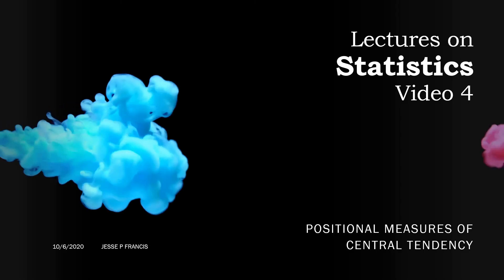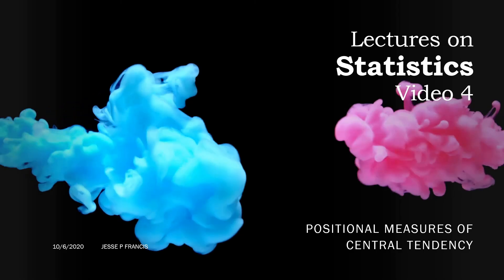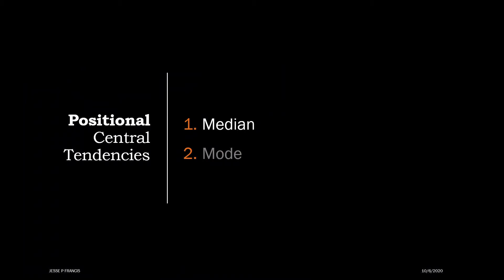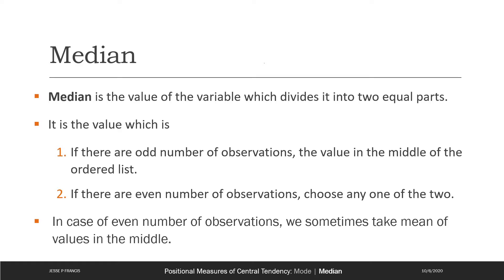We will be discussing positional measures of central tendency. There are two of them: one is median and the other is mode. We'll start our discussion with median. Median is roughly speaking the value towards the center of the distribution, but a small heads up — before you try to spot the value towards the center, you should sort the distribution in increasing or decreasing order.